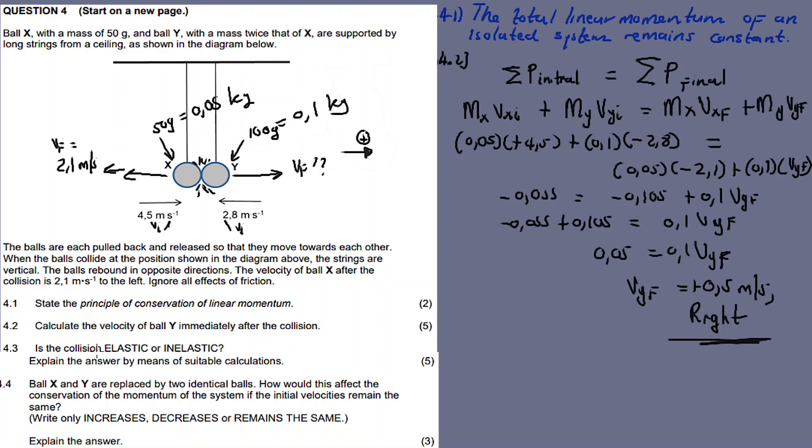For 4.3: is the collision elastic or inelastic? Explain using suitable calculations. To determine the elasticity of a collision we use kinetic energy. Calculate the sum of kinetic energy before, then the sum of kinetic energy after, and compare. If they are equal the collision is elastic — no loss of energy. If the initial sum of kinetic energy is not equal to the sum after, it is inelastic.